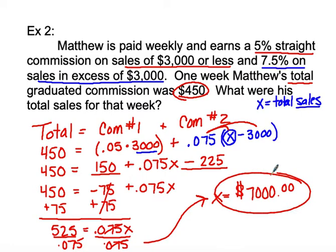So what he did was he earned 5% on the first $3,000, and then 7.5% of the remaining $4,000, giving us a total commission of $450.